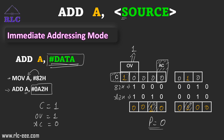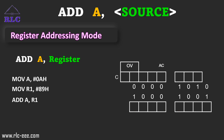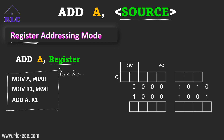Next, we'll move on with an example of register addressing mode with the ADD instruction. In this mode, the source is a register from R0 to R7. In this code snippet: MOV A, #0Ah stores 0Ah in the accumulator; MOV R1, #89h stores 89h in R1; and finally ADD A, R1 adds the content of the accumulator with the content of R1.